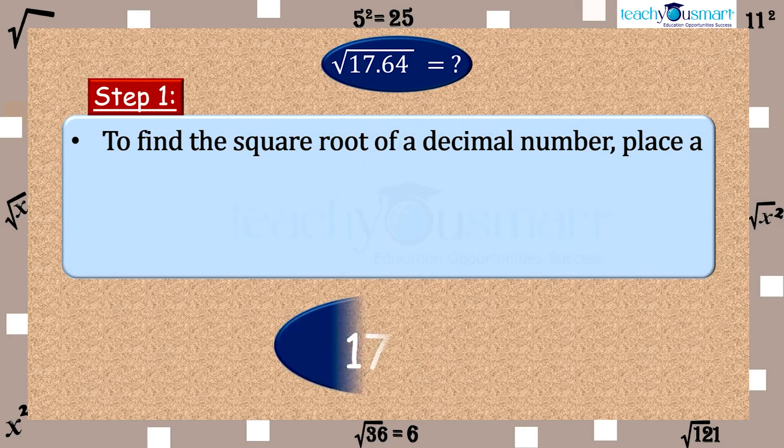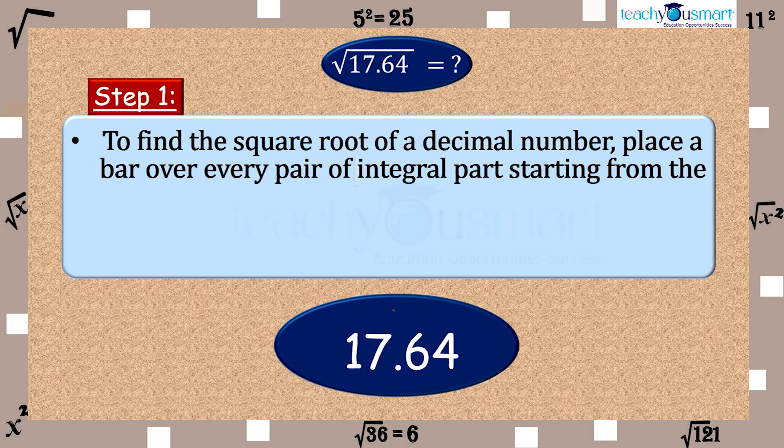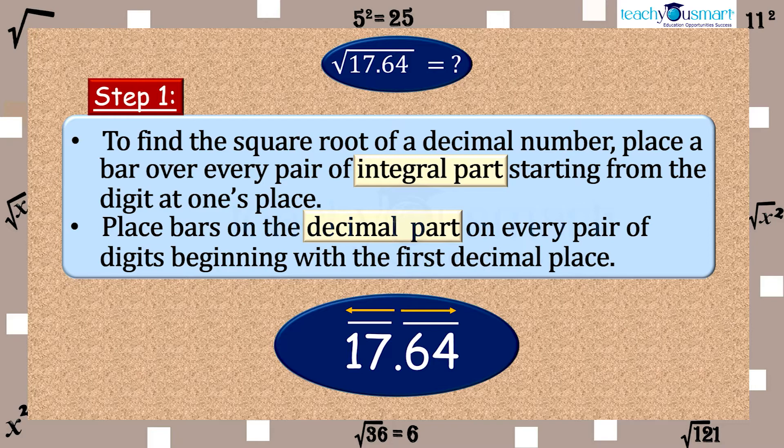Step 1. To find the square root of a decimal number, place a bar over every pair of integral parts, starting from the digit at 1's place and place bars on the decimal part on every pair of digits, beginning with the first decimal place.